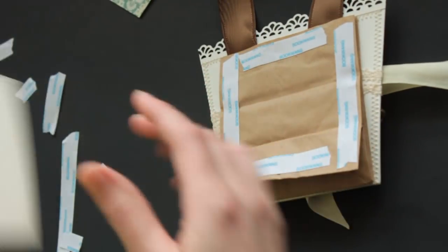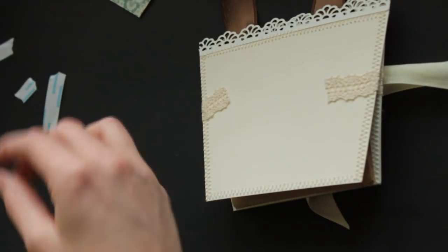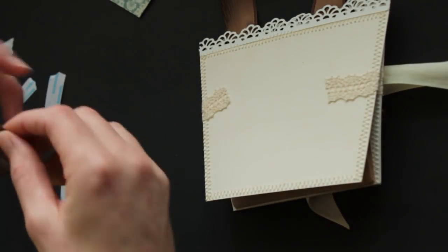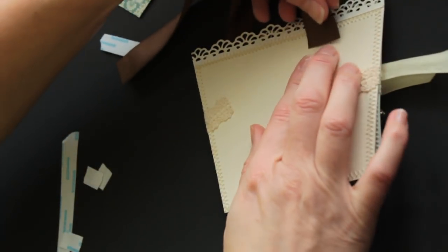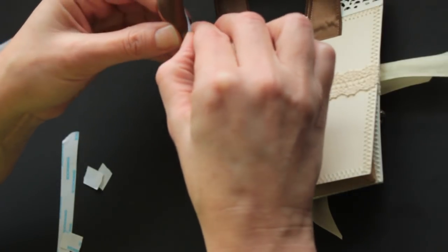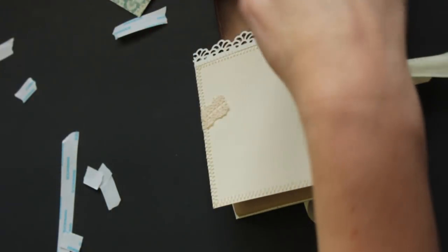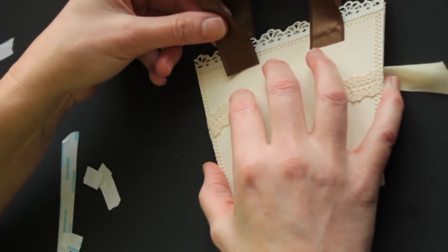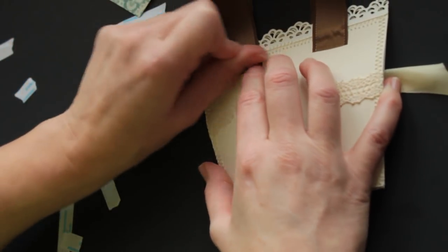Let's use that as our guide for the other handle and put that on like you should before you put it on the lunch bag. This way we know they're even.